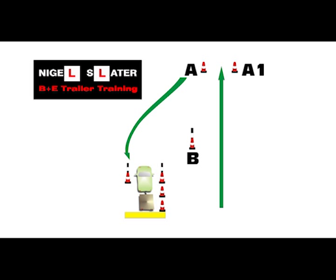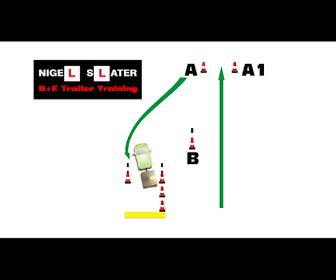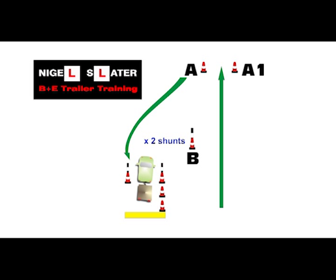The specified finishing area is 1 metre in length and 1.5 times the width of the trailer. The candidate is allowed to get out of the vehicle to check if the trailer is in the box, and they are allowed 2 corrective shunts.